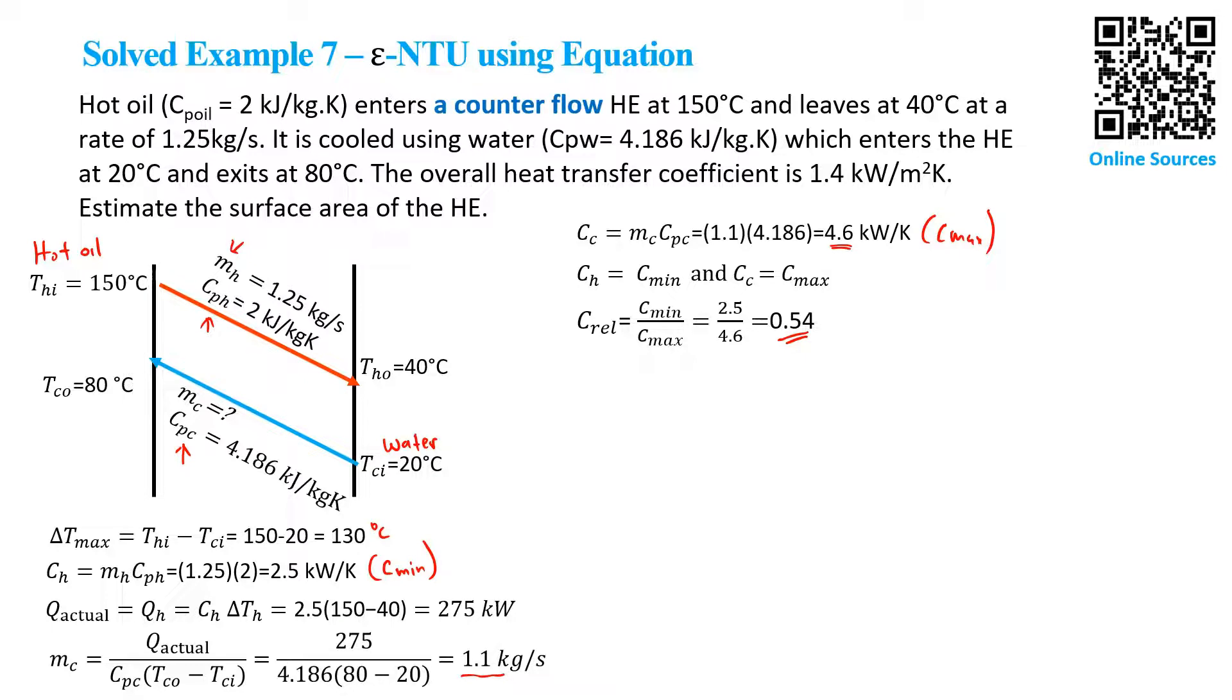Subsequently, we find the effectiveness number, which equals Q_actual divided by Q_max. We end up with ε = 0.85.